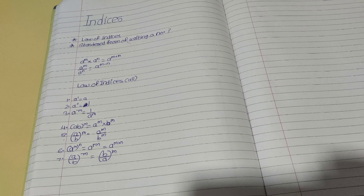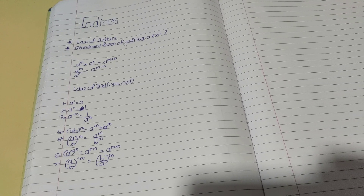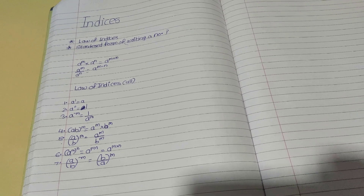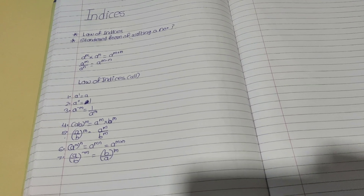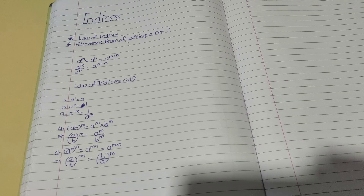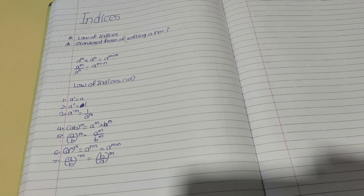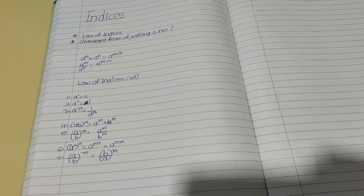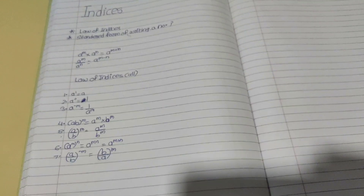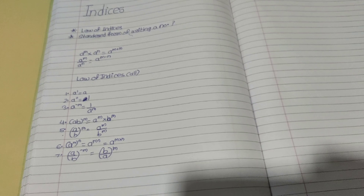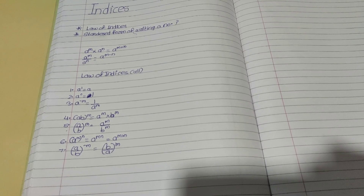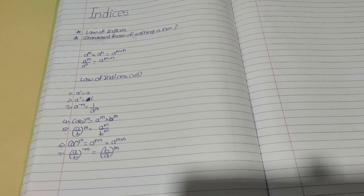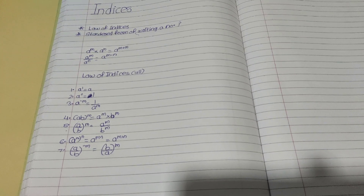The next law: a times b in brackets, raised to the power of m, equals a raised to the power of m into b raised to the power of m. You just have to remember this — no need to memorize, only remember. The next: a upon b in brackets raised to the power of m equals a raised to the power of m upon b raised to the power of m. The sixth: a raised to the power of m, in brackets with n outside, means a raised to the power of m into n.